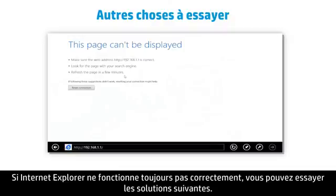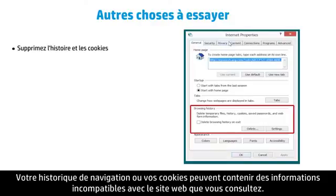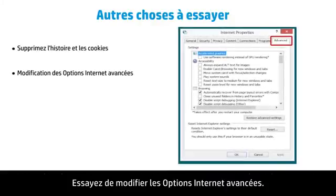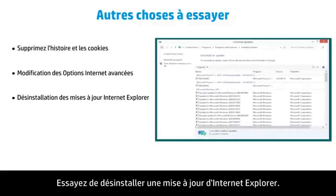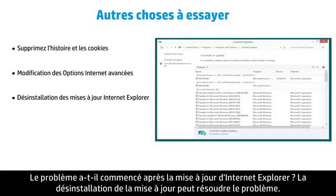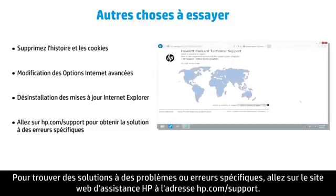If Internet Explorer is still not working properly, you might try some of these additional solutions. Try deleting your browsing history and cookies, as they may contain information that conflicts with the website you are viewing. Try changing Advanced Internet Options, which allows you to change the way websites are displayed. Try uninstalling an Internet Explorer update — if the problem began after an update, uninstalling it may solve the problem. To find solutions for specific problems and errors, check the HP Support website at hp.com/support.